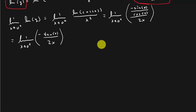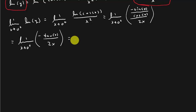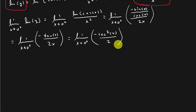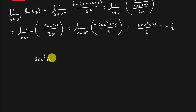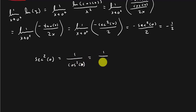If we plug zero in, we get zero over zero again, so we apply L'Hôpital's rule a second time. That gives us the limit as x goes to zero from the right of negative secant squared x over 2. Plugging zero in: secant squared zero is 1 over cosine squared zero, which is 1 over 1 squared, which is 1. So we get negative 1 half.